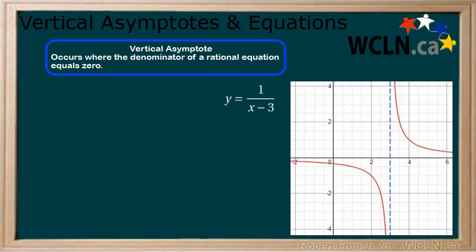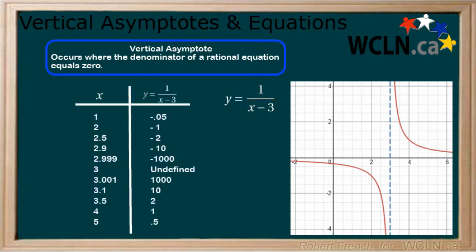Consider the following example. There is a vertical asymptote at x equals 3. If we solve our equation for the coordinates approaching x equals 3, we see that as we get closer to the denominator equaling 0 at x equals 3, our y values get infinitely small if approaching from the left and large if approaching from the right.